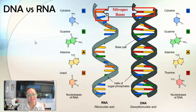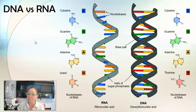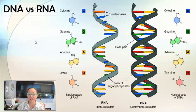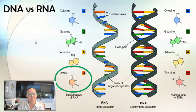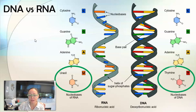They both have the nitrogen bases adenine, guanine, and cytosine — A, G, and C. The difference is RNA has the nitrogen base uracil where DNA has the nitrogen base thymine. So RNA has a U where DNA has a T.